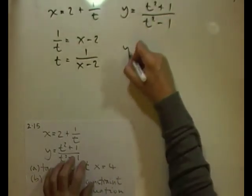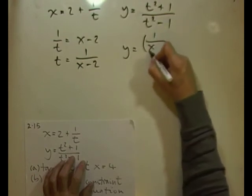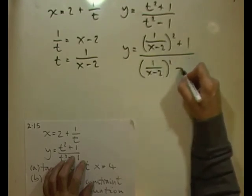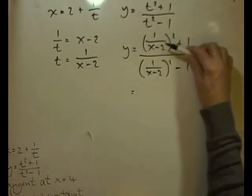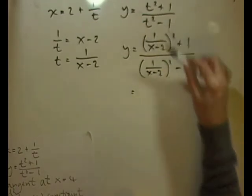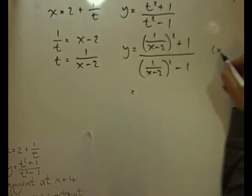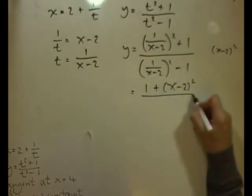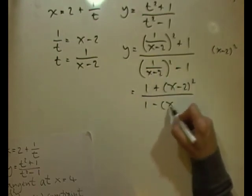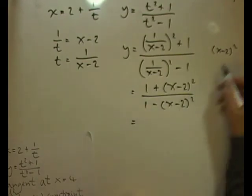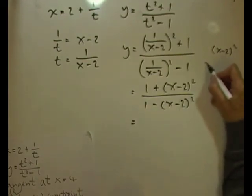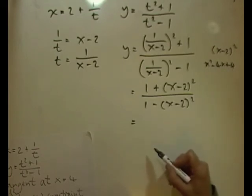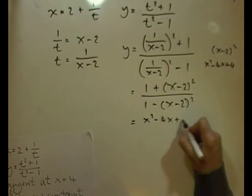Substituting t = 1/(x−2) into y = (t²+1)/(t²−1): y = (1/(x−2)² + 1) / (1/(x−2)² − 1). Multiplying top and bottom by (x−2)²: the top becomes 1 + (x−2)² = 1 + x² − 4x + 4 = x² − 4x + 5.